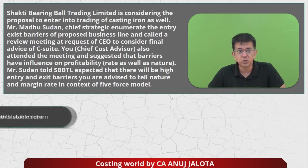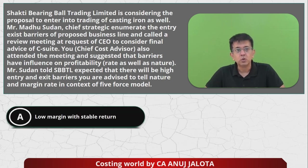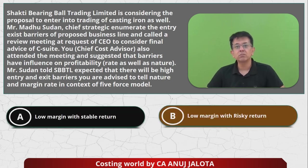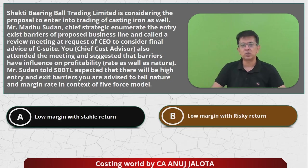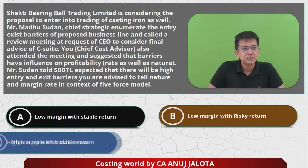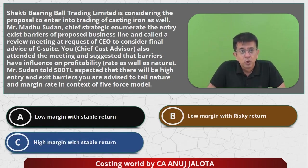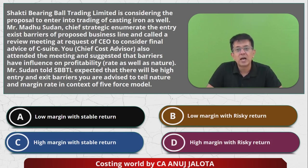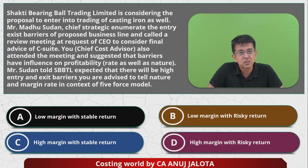So there are four options: A — low margin with stable returns; B — low margin with risky returns; C — high margin with stable returns; and D — high margin with risky returns.